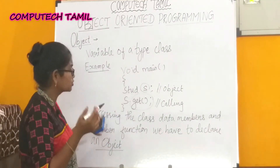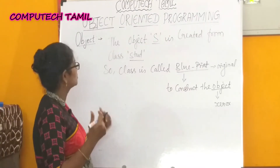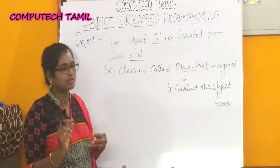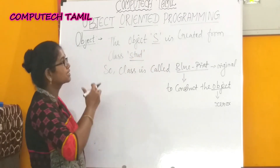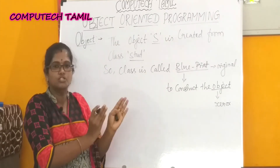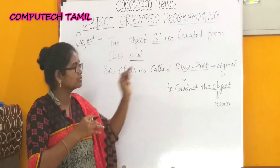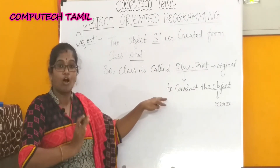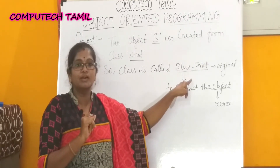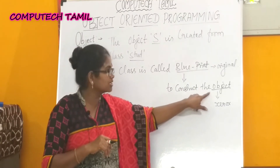To access the class data members and member functions, we have to declare an object. Let's look at an example. In the example, student is the class. The object is created from the class student. The class is designed like a blueprint — that is the original blueprint. The object is a copy created from that blueprint.